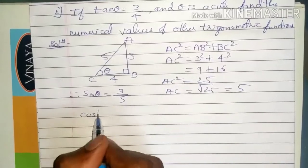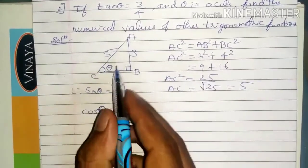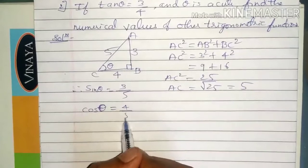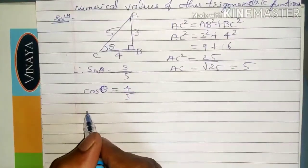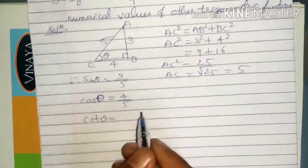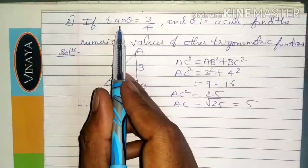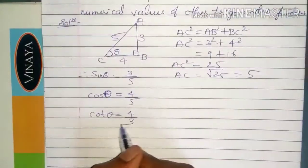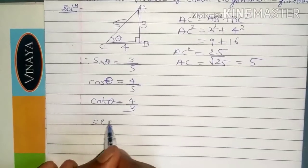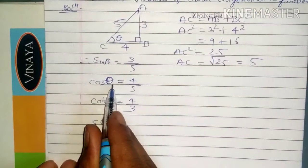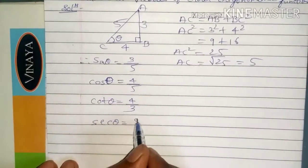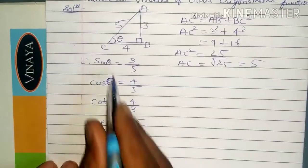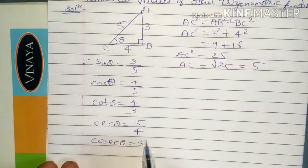Therefore, sin theta equals opposite by hypotenuse, which is 3 by 5. Cos theta equals adjacent by hypotenuse, which is 4 by 5. Cot theta is the reciprocal of tan theta, so that is 4 by 3. Sec theta is the reciprocal of cos theta, so that is 5 by 4. Cosec theta is the reciprocal of sin theta, so that is 5 by 3.